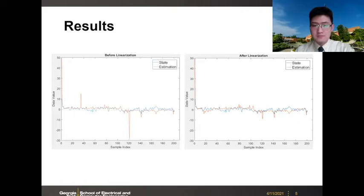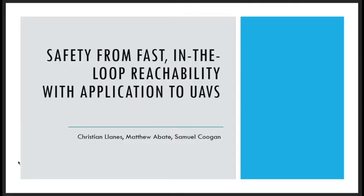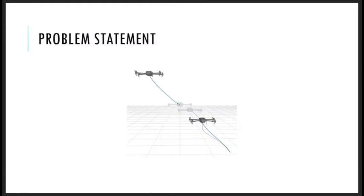That's it. Thank you very much for watching. Hello, everyone. I'm Christian Yanis, and I am here to present the poster titled Safety from Fast-in-the-Loop Reachability with Application to UAVs. Unmanned aerial vehicles have become increasingly accessible over the past decade. Operating such vehicles near civilians and property can be quite dangerous, emphasizing the need for verifiable safety of highly dynamic systems such as UAVs.